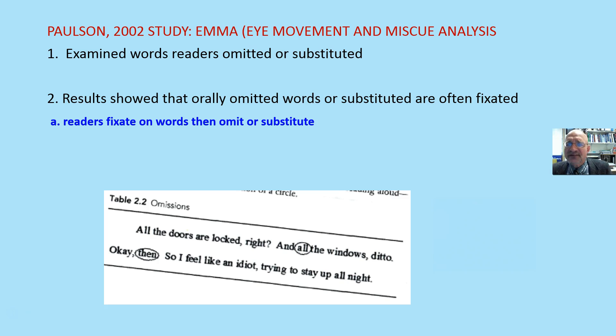2000 study, eye movement and miscue analysis. Paulson examined the words readers omitted or substituted. The results showed that orally omitted words or substituted words are often fixated. That means our eyeballs stop right on the word, but we still often either omit it or substitute it. So get rid of this idea that we omit words related to not being able to see it somehow.